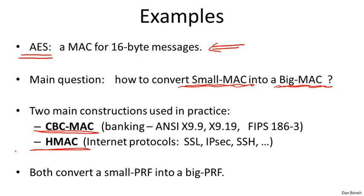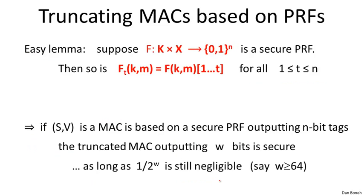The two are used in very different contexts. CBC-MAC is very commonly used in the banking industry — for example, there's a system called the Automatic Clearinghouse, ACH, which banks use to clear checks with one another. In that system, CBC-MAC is used to ensure integrity of checks as they're transferred from bank to bank. On the internet, protocols like SSL, IPsec, and SSH all use HMAC for integrity. Both constructions start from a PRF for small messages and produce a PRF for messages that are gigabytes long, and both can be instantiated with AES as the underlying cipher.